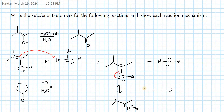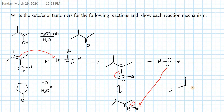In the second step, water will act as a base and will deprotonate the protonated ketone. Water acts as a nucleophile, and we are going to form neutral ketone plus hydronium. The products are ketone plus hydronium ion.